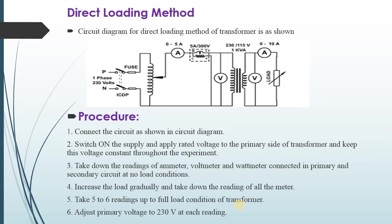Adjust the primary voltage to 230 volts at each reading — then and only then this method is correct. By using these readings of the primary side and secondary side, we can calculate voltage regulation as well as efficiency of the transformer using the formulas discussed earlier.